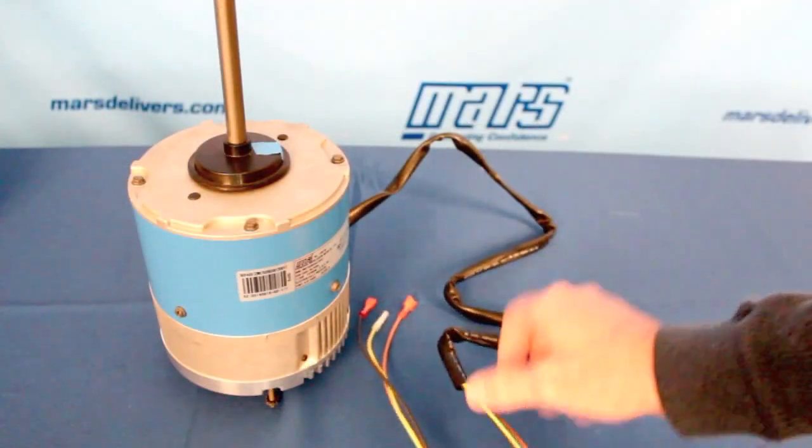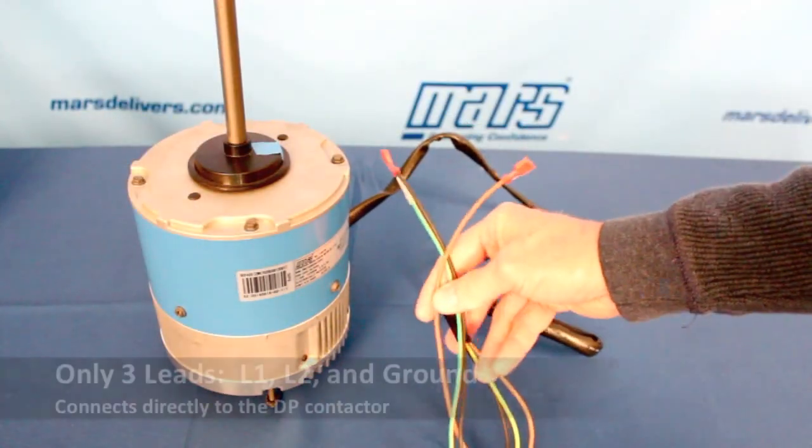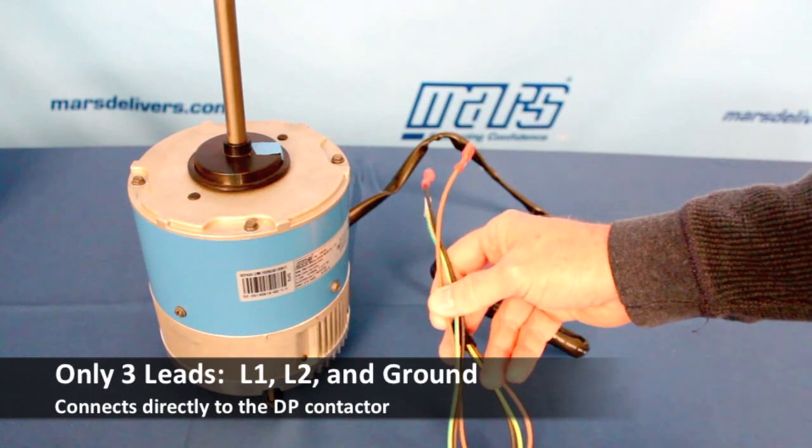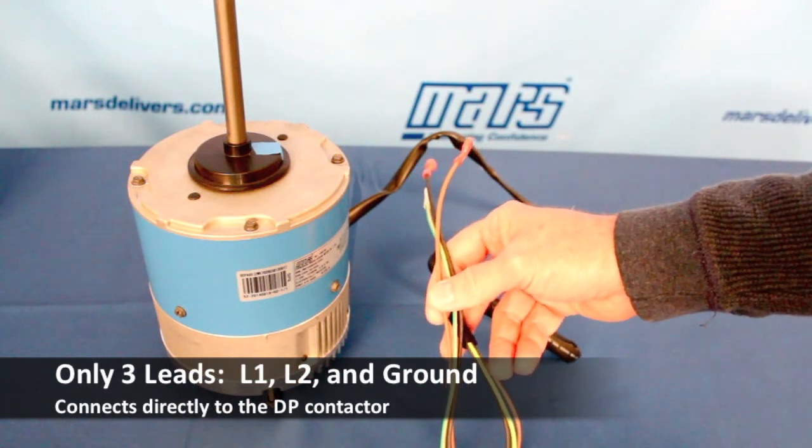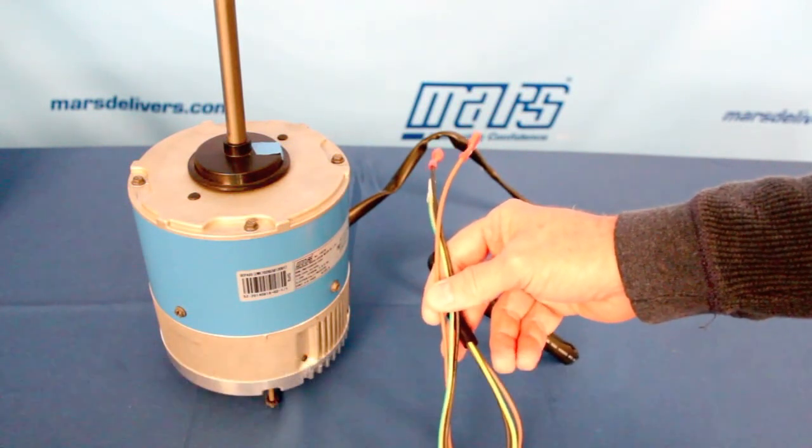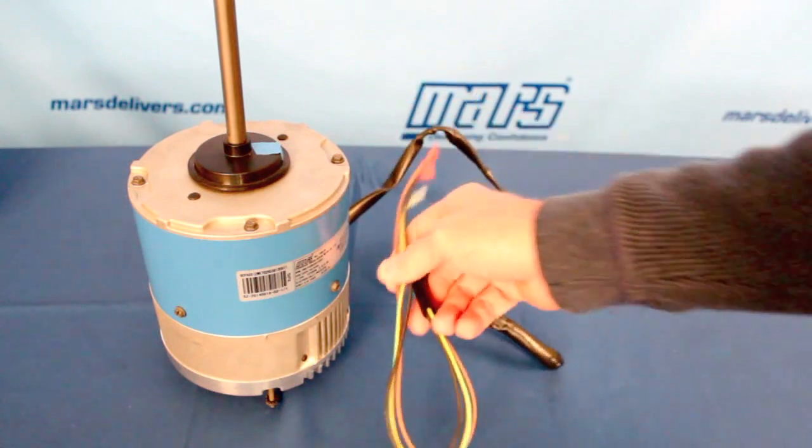When you open the box, you'll notice the motor has a three lead harness: L1, L2, and a ground. This motor connects directly to the contactor. There is no capacitor because this is an ECM motor. It's very easy to install.